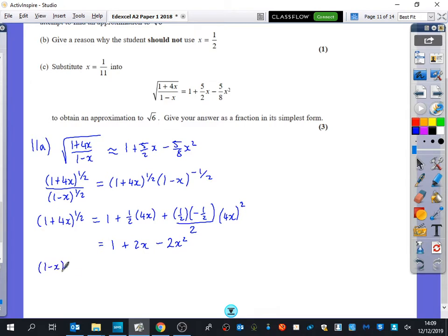I'm going to do the same with our 1 minus x to the minus a half. So in this case our value of n the power is minus a half. So we get 1 plus n and our x is minus x plus n times n minus 1 all over 2 multiplied by x which is minus x all squared. So that becomes 1 plus a half x. Now this is going to be positive. So I've got a half times 3 over 2 divided by 2 plus 3 over 8 x squared.